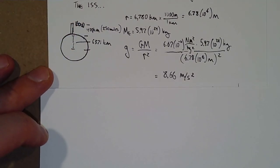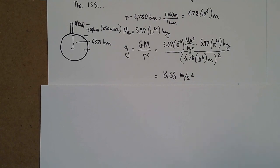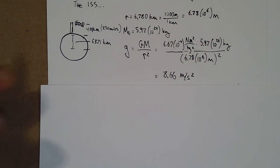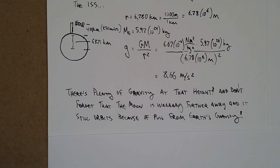When you do the calculations, it ends up giving you 8.66 meters per second squared. For all intents and purposes, your weight would not be appreciably different. So if you're going to go 250 miles above the Earth's surface to drop a couple pounds, that's literally all you're going to do. Most of your weight is still going to be there. And let's not forget the Moon orbits much further out than the ISS, and there's still plenty of gravity there to keep the Moon orbiting the Earth.